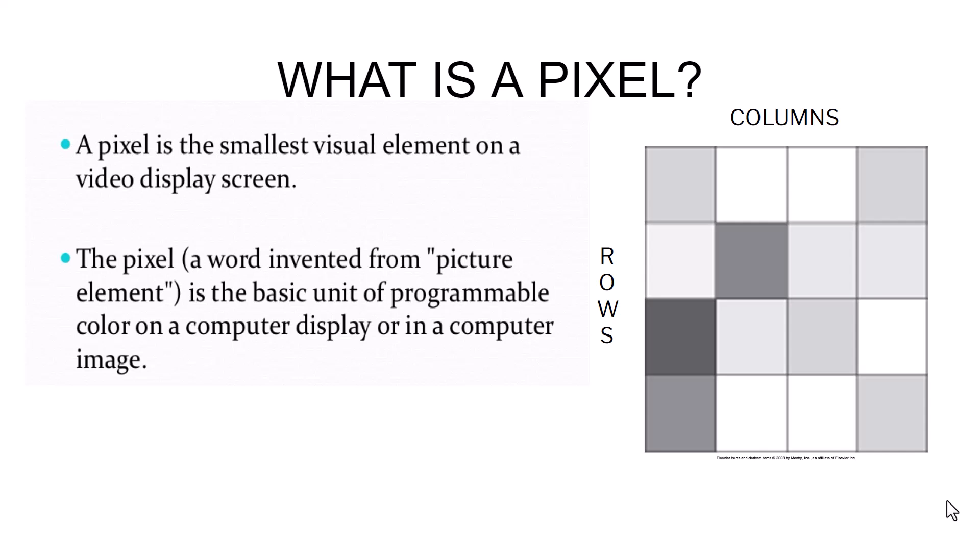What is a pixel? A pixel is the smallest visual element on a video display screen. To the right we have a matrix size of 16, or 4 pixels by 4 pixels. The pixel, or picture element, is the basic unit of programmable color on a computer display. Each individual pixel is assigned a numerical value indicating its brightness level, and we need varying levels of brightness to be able to distinguish structures as separate on the radiograph.